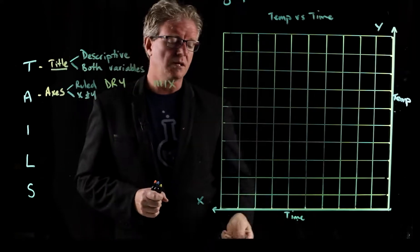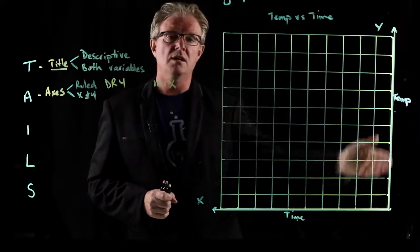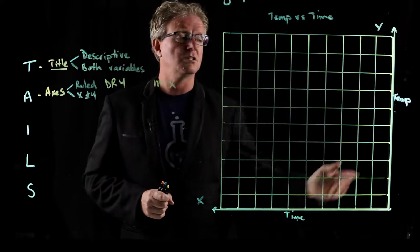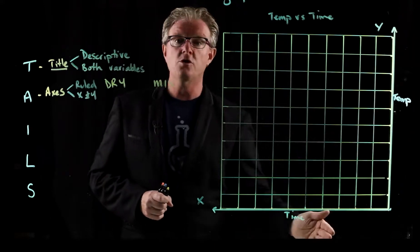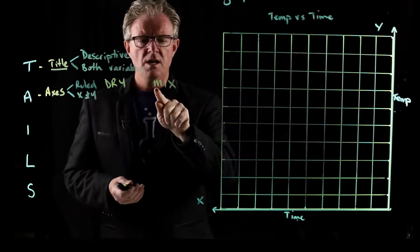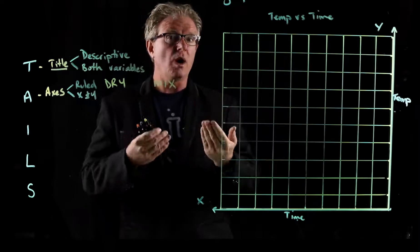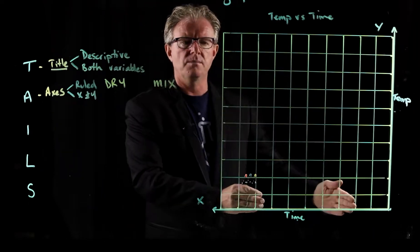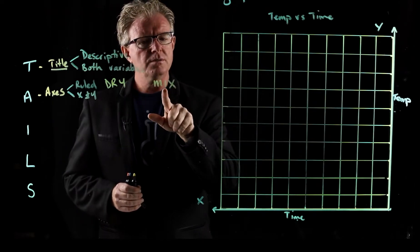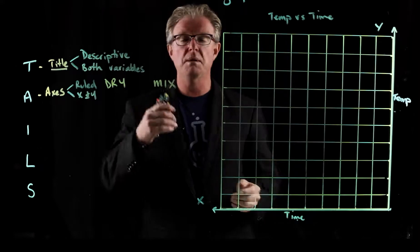Using our example here, we've chosen to measure the temperature every one minute. The temperature is going to be different depending upon what time you measure it. So it's responding to how long you heat it. So the dependent variable is on the y-axis. The MIX stands for the manipulated variable, that is the one that you are choosing as the experimenter. It is the independent variable and it's on the x-axis.